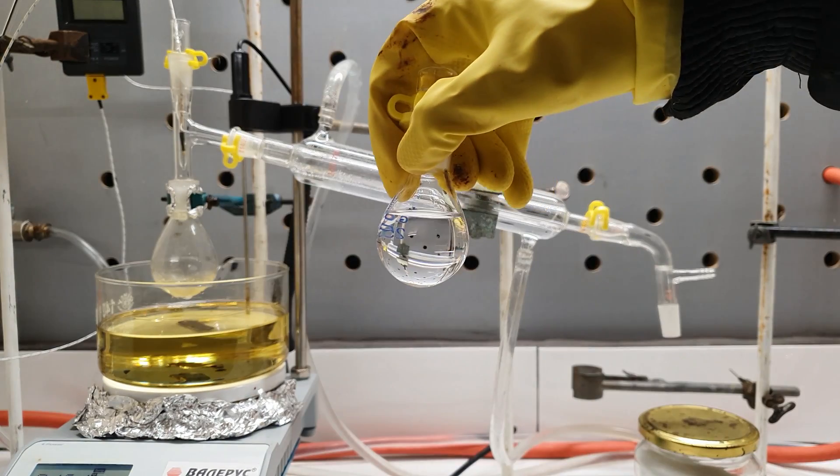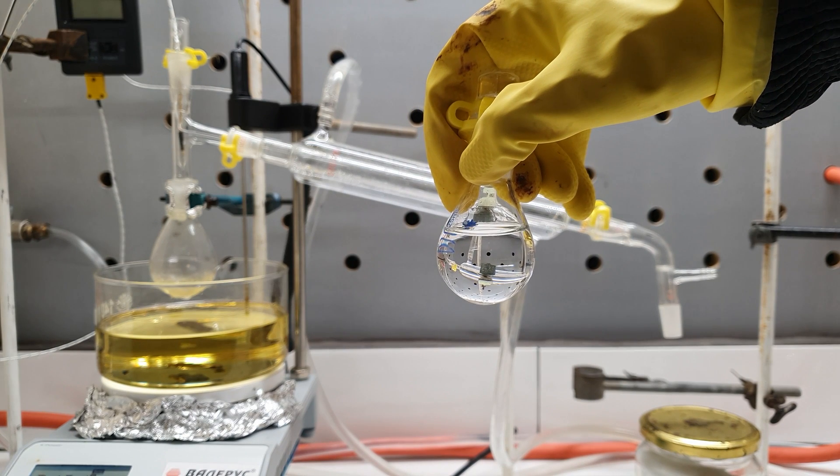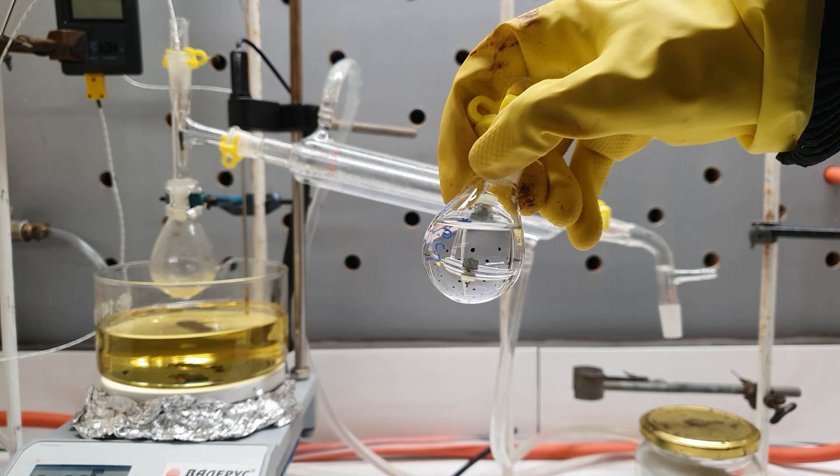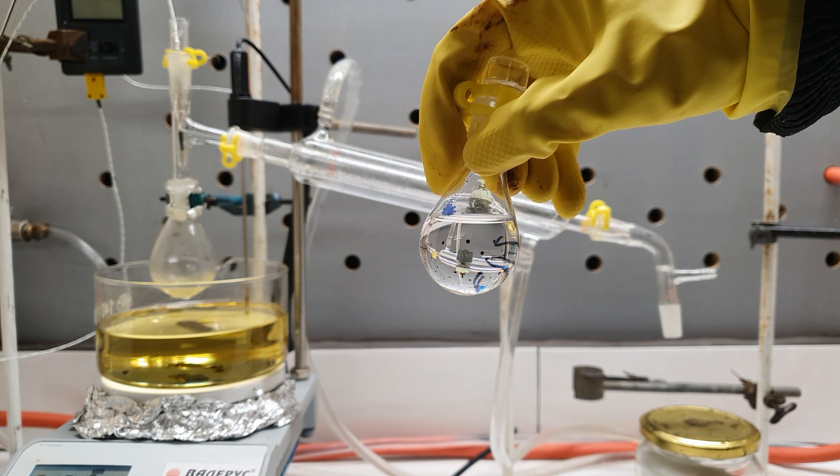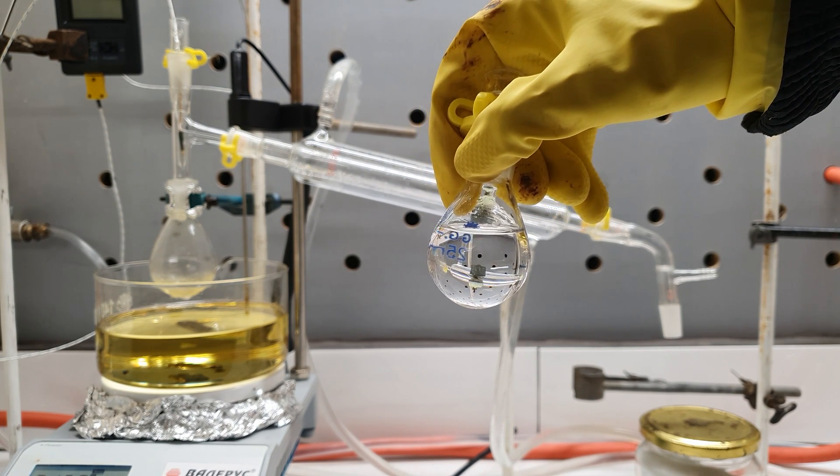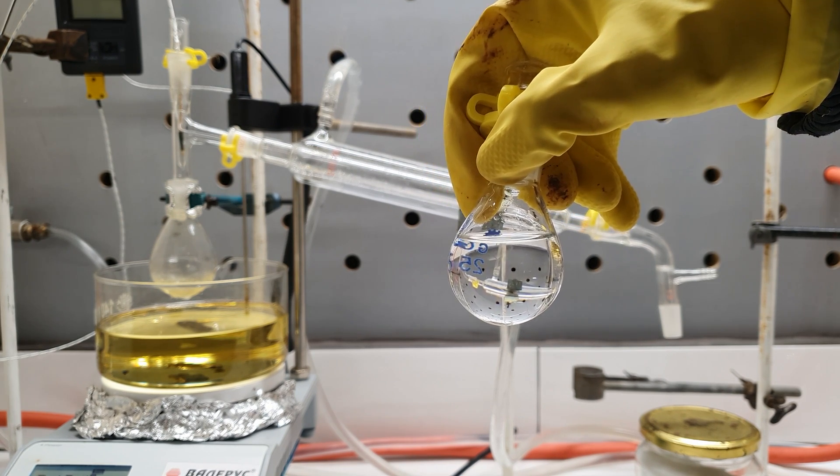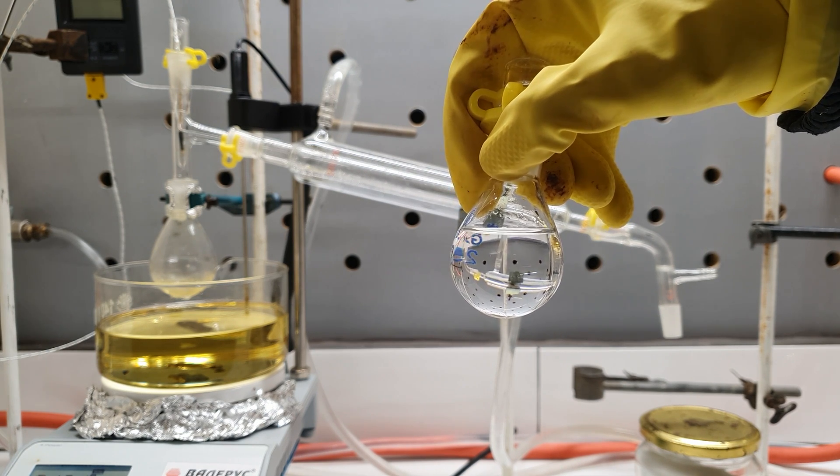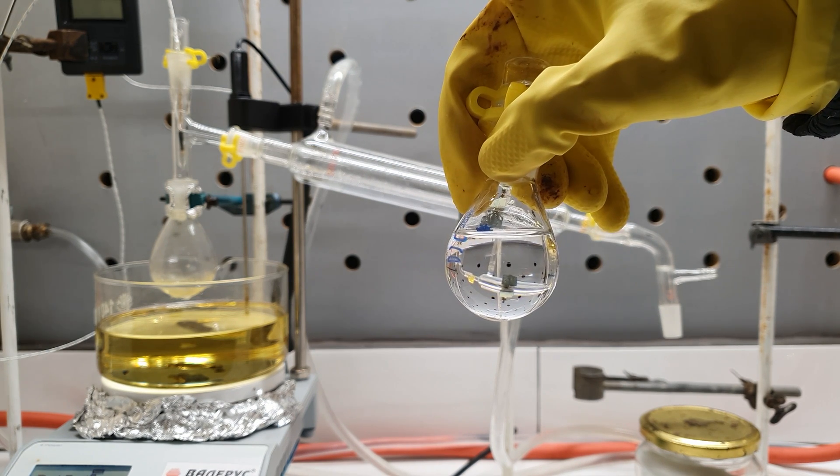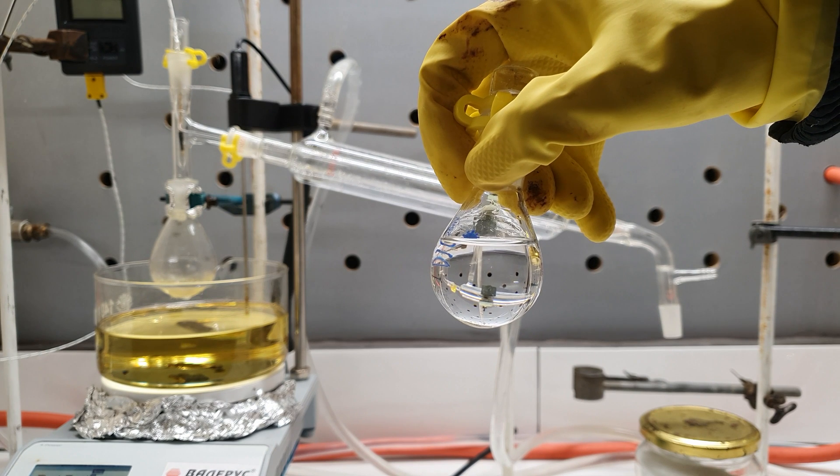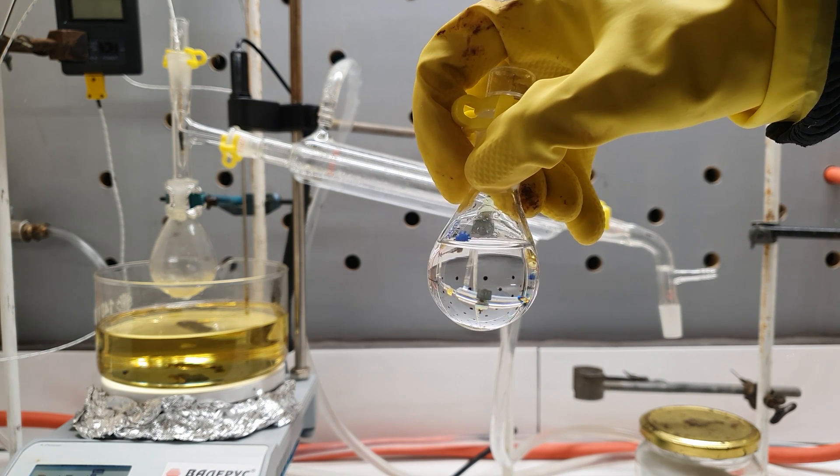And here is my final yield of 20 grams pure nitromethane. This corresponds to a percent yield of 31%, which honestly is quite low. However, the paper I was following suggested a yield of 42%, so it is probably the reaction not being very efficient.